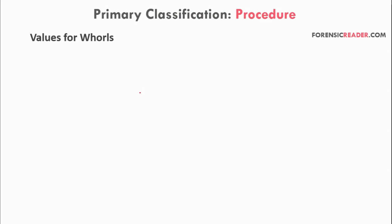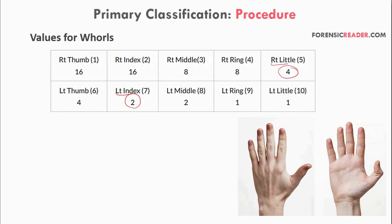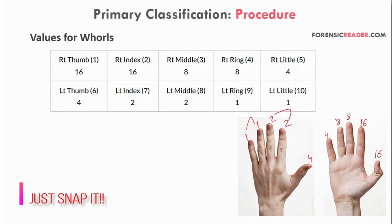The values for whorls in primary classification are based on which finger they appear in. For example, a whorl in the right ring finger is given a value of 8, and in the left index finger a value of 2. To remember these values easily, align both hands and start numbering from the right thumb with value 16. For each subsequent finger, divide the previous value by 2: right thumb 16, right index 16, right middle 8, right ring 8, right little 4, left thumb 4, left index 2, left middle 2, left ring 1, left little 1. Each pair of fingers shares the same value.